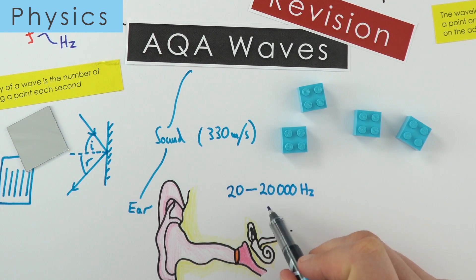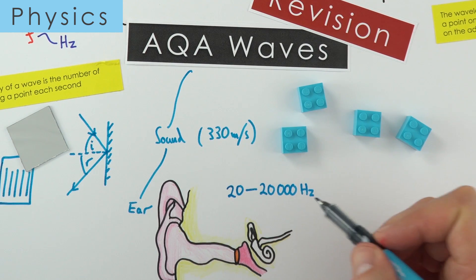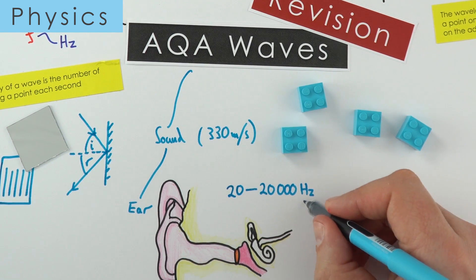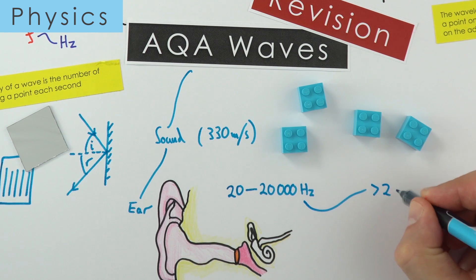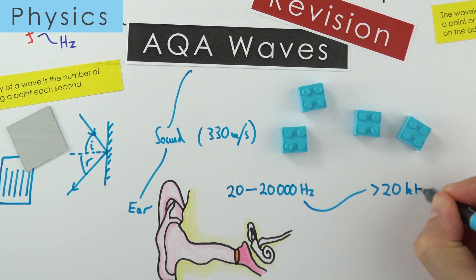Anything above this, any sound waves which are higher than this, we can't detect. Sound waves that we can't hear have a frequency greater than 20 kilohertz, and this is what we call ultrasound.